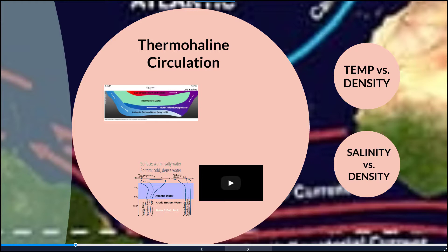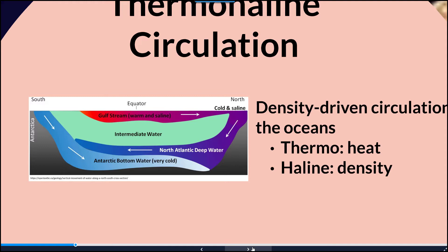We also need to understand thermohaline circulation to really understand what's happening with ocean water movement. Water circulation throughout the oceans is density-driven. The 'thermo' part refers to heat or temperature, and the 'haline' aspect refers to salinity, which corresponds to density within the water column. In this figure, we have Antarctica on the left, the equator in the middle, and the North Pole on the right, showing a trend in the temperature and density composition that differs from south to north.